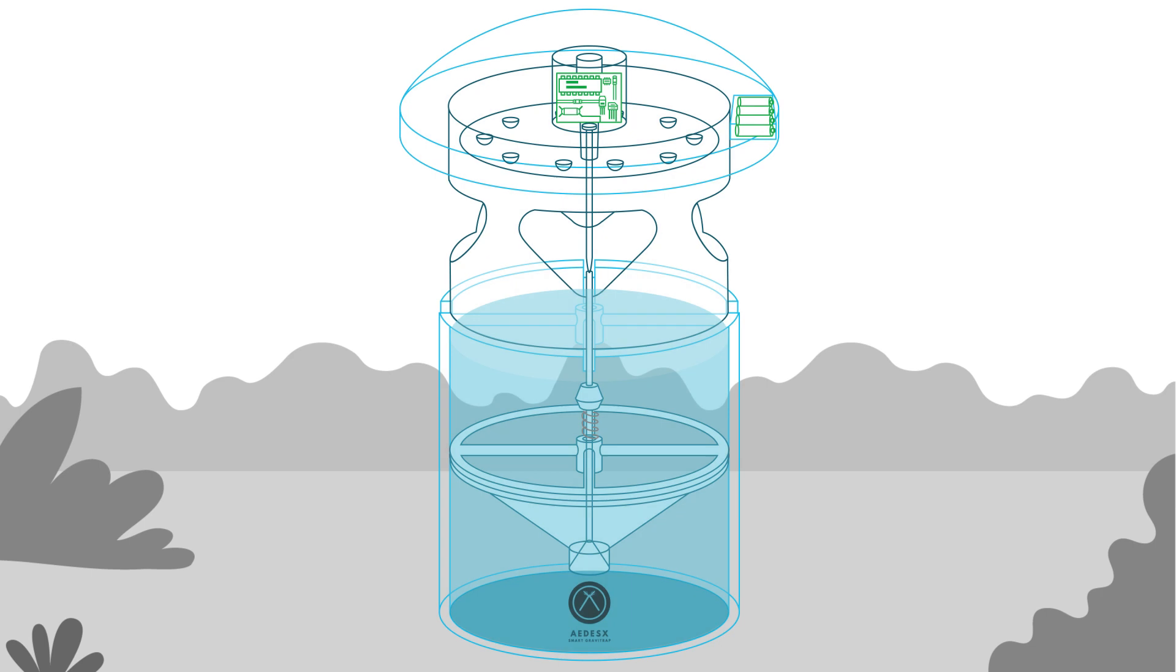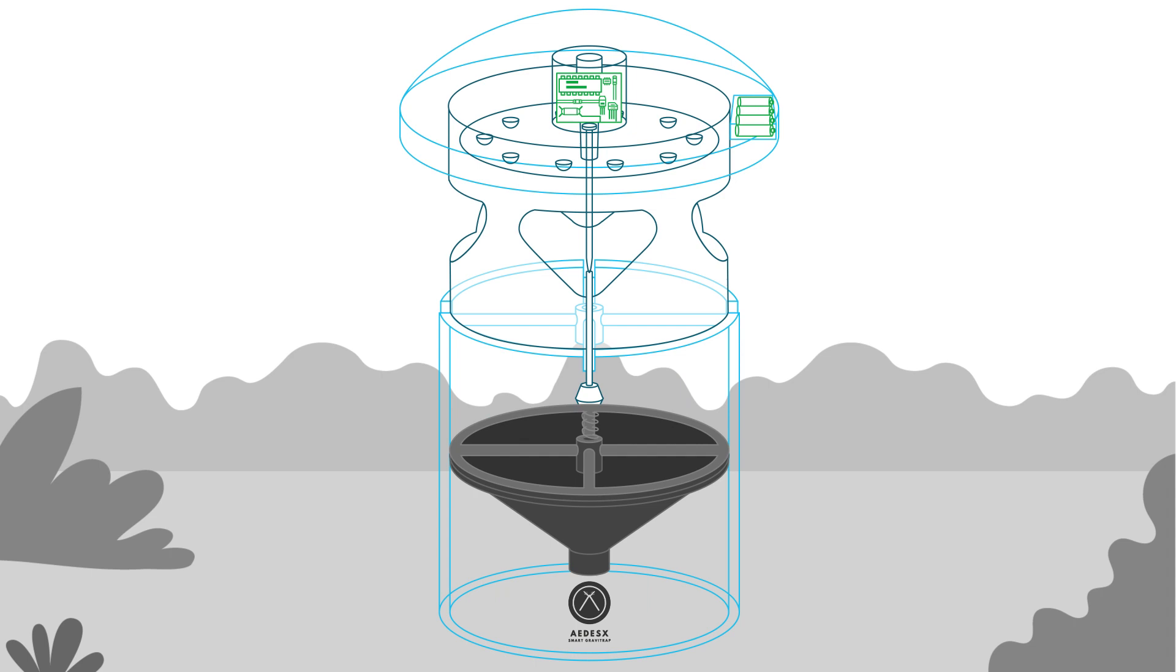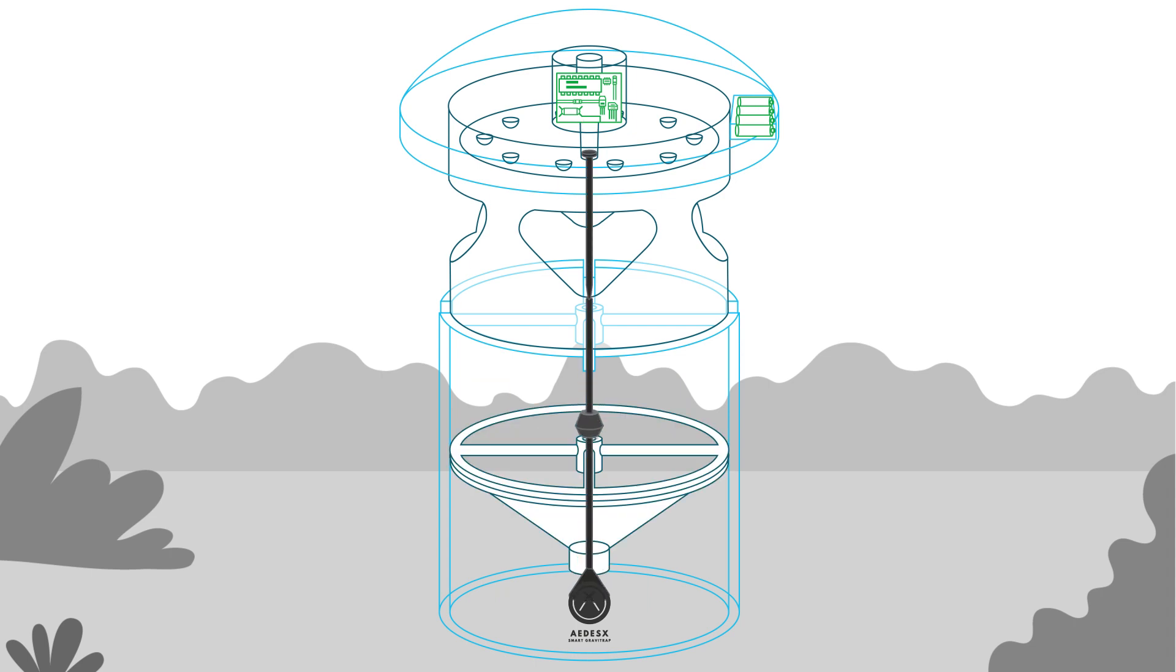The Aedes X Smart Gravitrap consists of a kill zone water reservoir, a funnel, a valve operation, and negative phototaxis LED lights designed with electronic intelligence built seamlessly into its design.